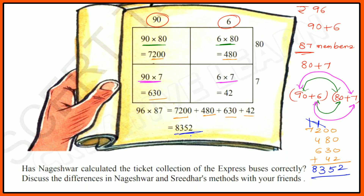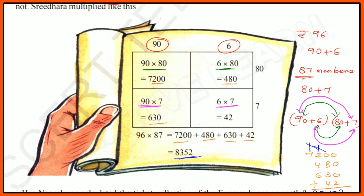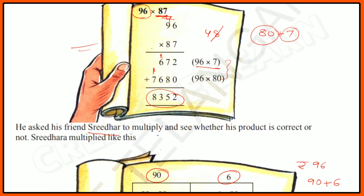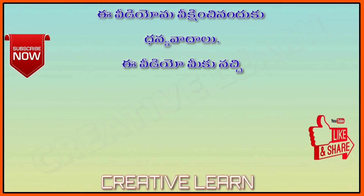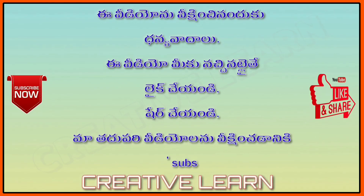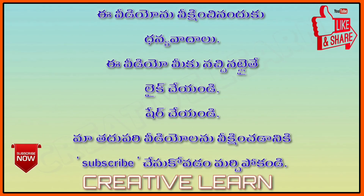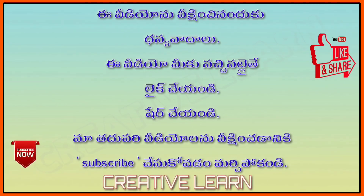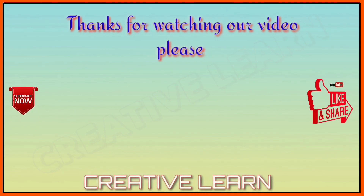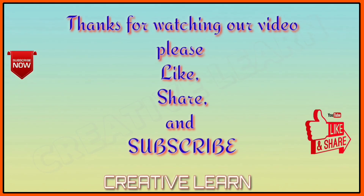Both Nageshwar's and Sridhar's methods give 8352, confirming it is the correct answer. Thanks for watching our video — please like, share, and subscribe.